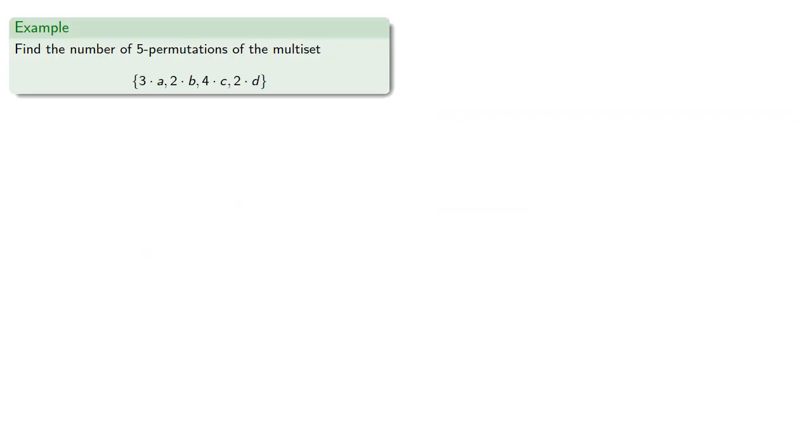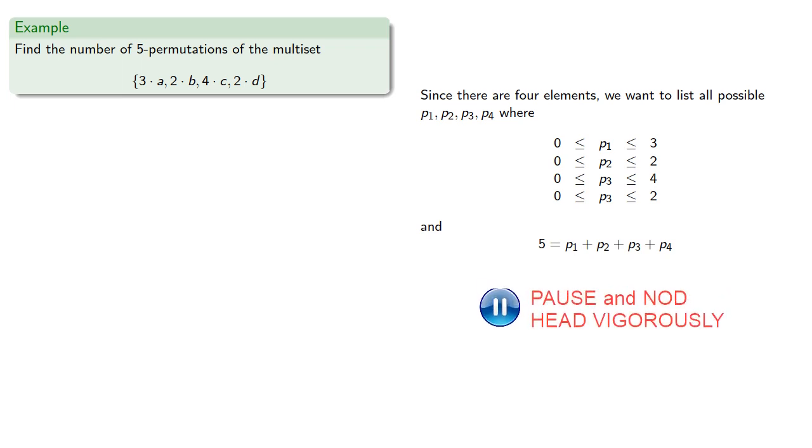To see why this formula is actually kind of useless, let's consider a fairly modest problem finding the number of 5 permutations of this multiset. Since there are 4 elements, we want to list all possible p1 through p4, where the p's are less than the corresponding repetition numbers, and they add to 5. Now, to keep track of everything, we can write these as ordered 4-tuples.